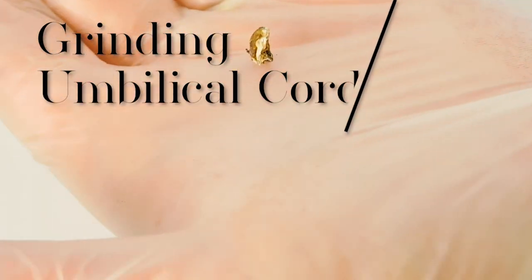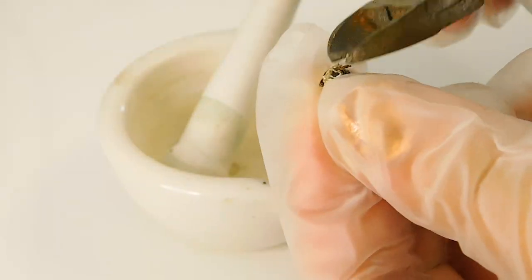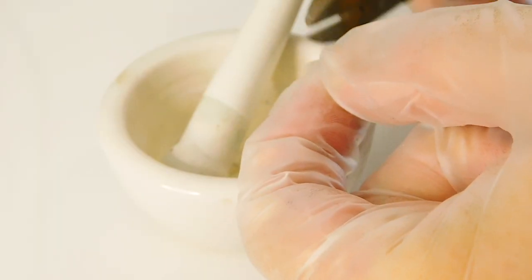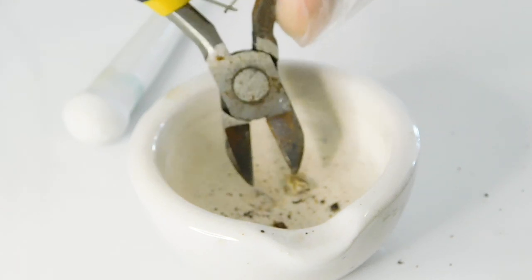Grinding umbilical cord. The pliers are the easiest way to cut umbilical cord. You can use scissors instead, but it's tricky because the cord is tough and sinewy.